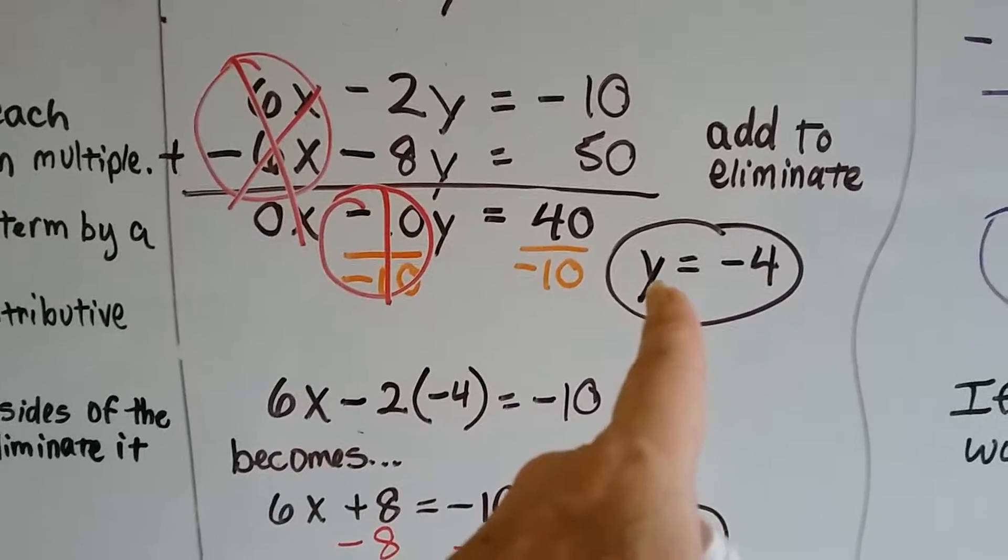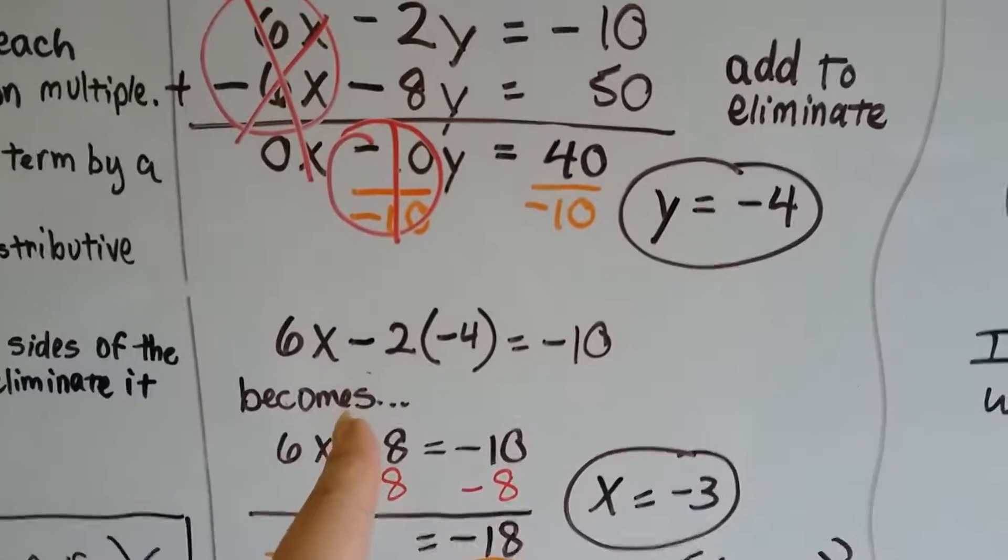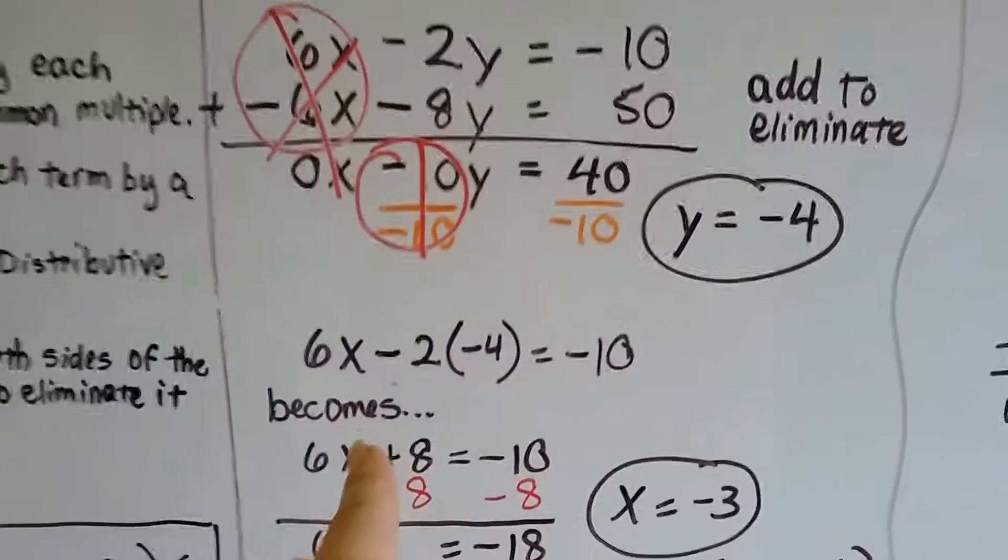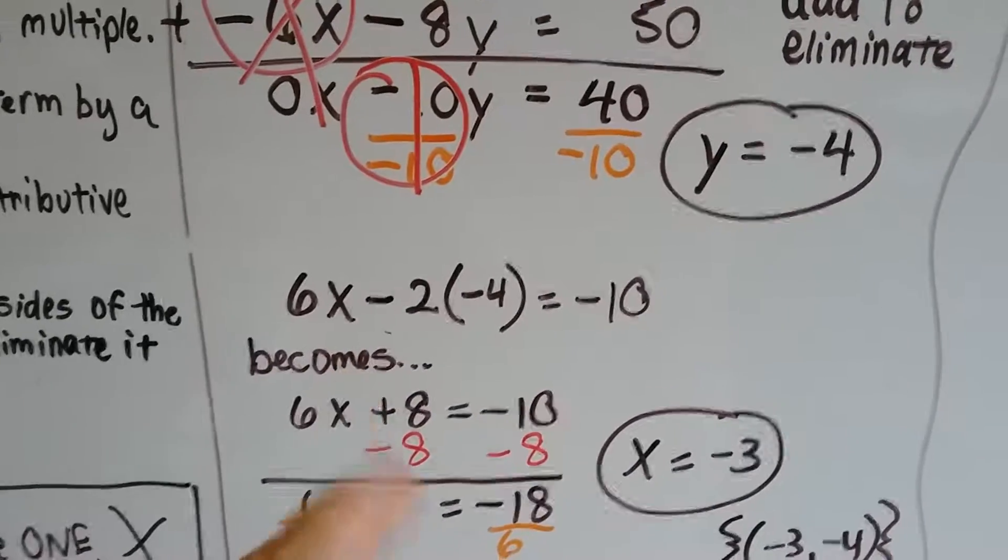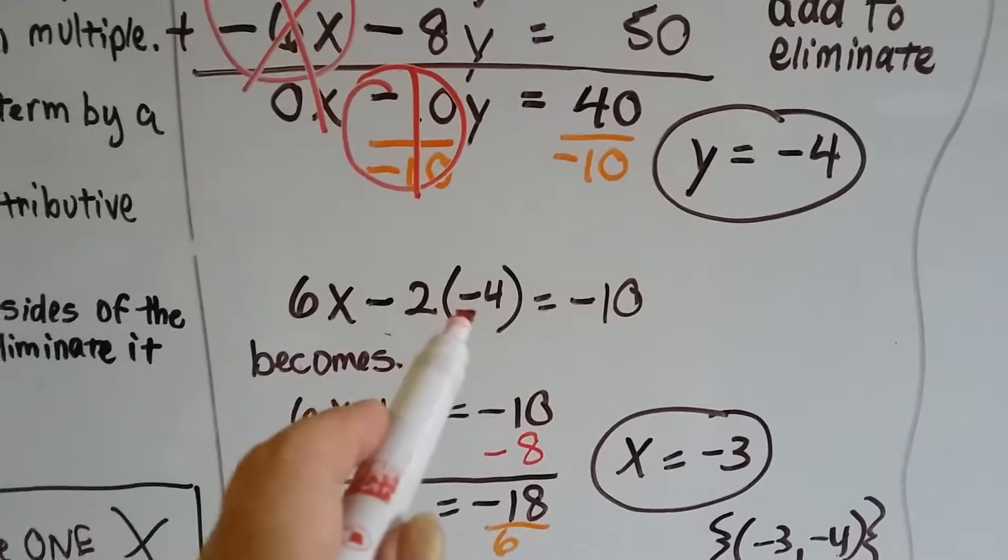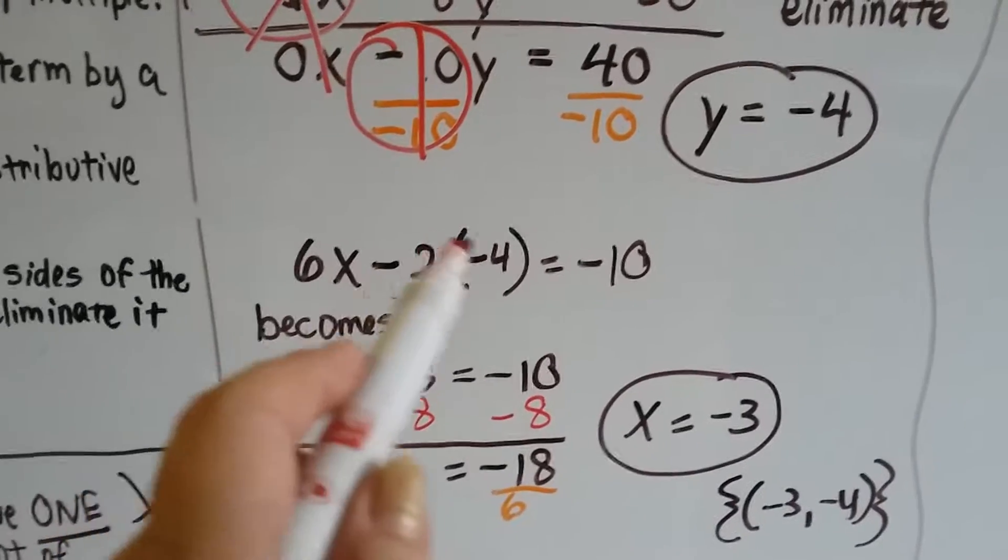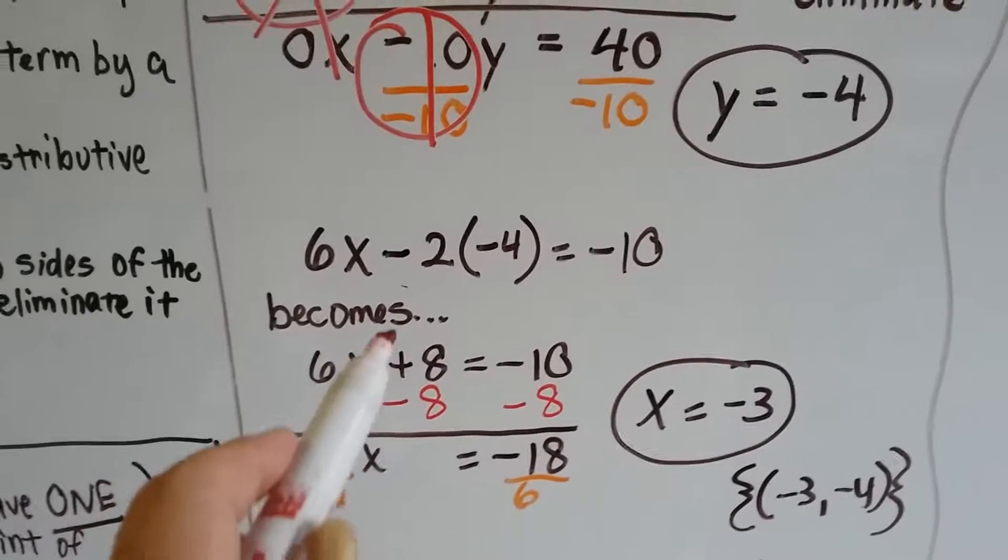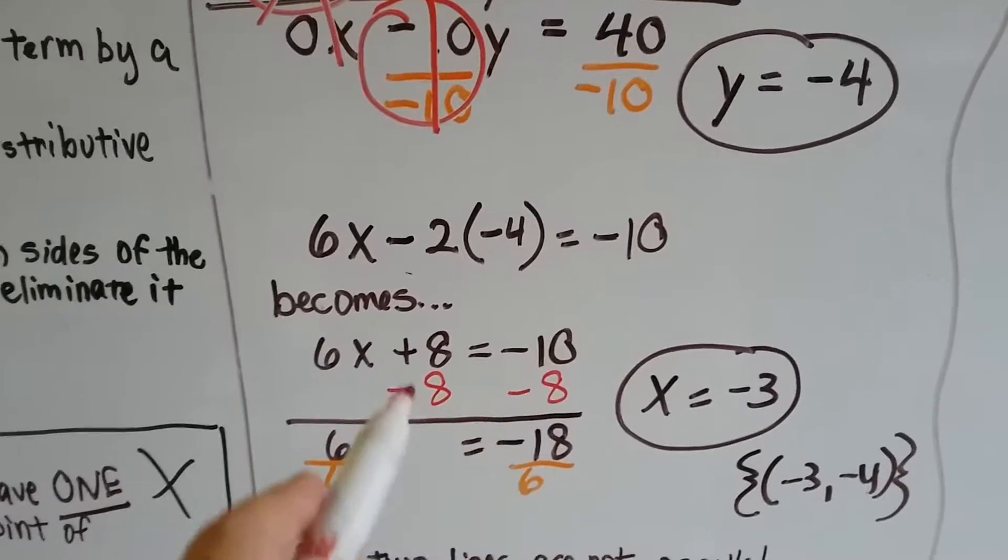We plug that in to the other equation to solve for x. In place of y we put negative 4. Negative 2 times negative 4 is positive 8, so now we got 6x + 8 = -10.